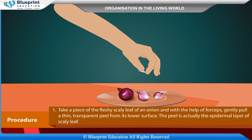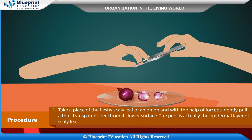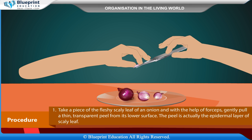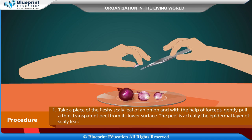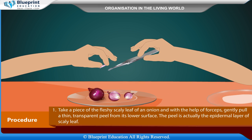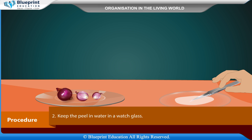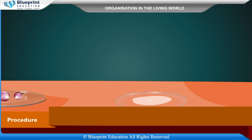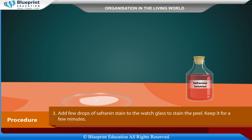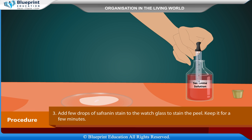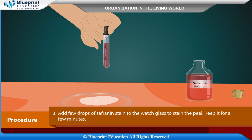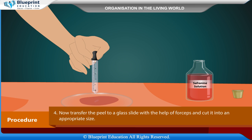Take a piece of fleshy scaly leaf of an onion and with the help of forceps, gently pull a thin transparent peel from its lower surface. The peel is actually the epidermal layer of the scaly leaf. Keep the peel in water in a watch glass and add a few drops of safranin stain to stain the peel. Keep it for a few minutes.